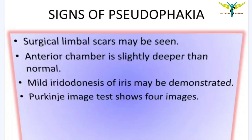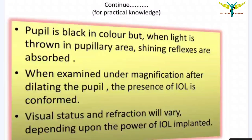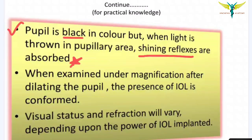The signs of pseudophakia are very important from a clinical point of view. The pseudophakic pupil is black in color, but when light is thrown into the pupillary area, shining reflexes are observed. When the eye is examined under magnification after dilating the pupil, the presence of the IOL is confirmed. Visual status and refraction will vary depending upon the power of the IOL implanted.